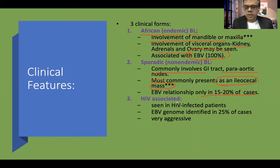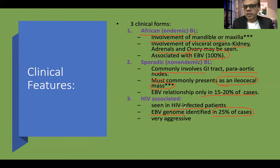HIV-associated Burkitt lymphoma is seen in HIV-infected patients, and EBV genome has been identified in about 25% of cases. In the African region where endemicity exists for both conditions, there may be cross-linkage, but the two forms have different clinical courses. HIV-associated Burkitt lymphoma follows a very aggressive course and carries a very poor prognosis.